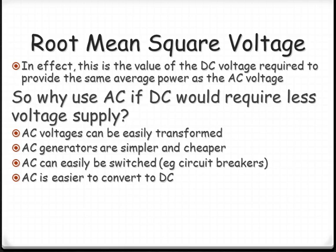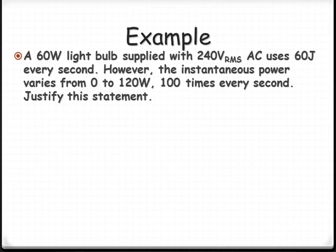So let's have a look at a couple of examples using this RMS concept. We've got a 60 watt light bulb gets 240 RMS volts, and if it's 60 watts, that means 60 joules of energy every second.